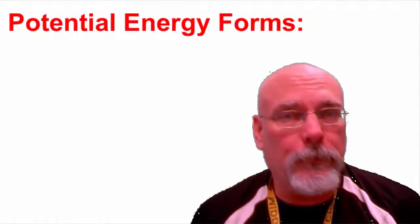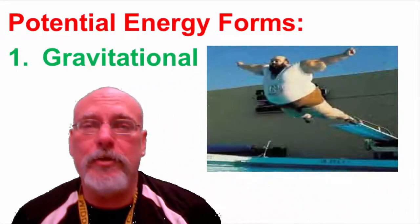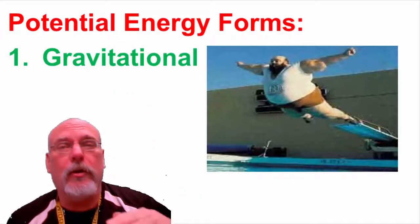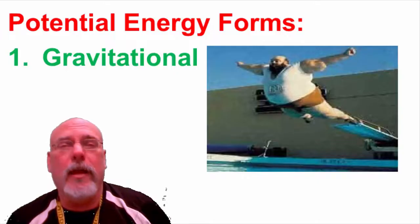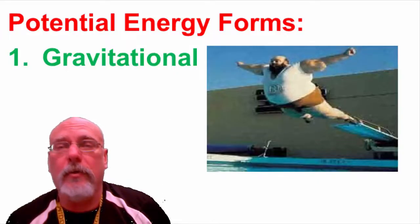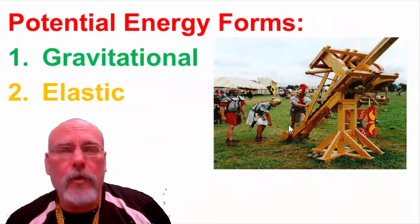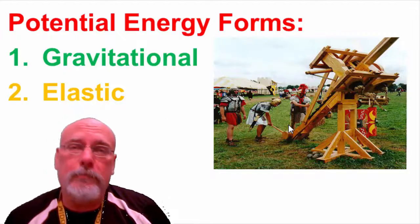For example, potential energy includes gravitational potential energy — that's the energy of position. The higher you have an object, the further and faster it can fall, so the higher and more massive the object, the greater the gravitational potential energy. Elastic potential energy occurs when you compress or stretch something like a rope, a spring, or a rubber band.